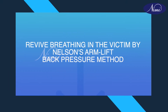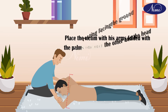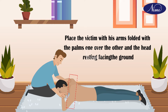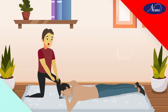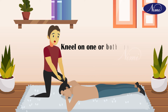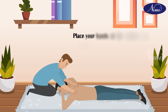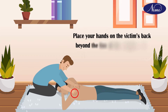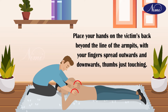To revive breathing by Nelson's arm lift back pressure method: place the victim with his arms folded, palms one over the other, and the head resting facing the ground with his cheek over the palms. Kneel on one or both knees near the victim's head. Place your hands on the victim's back beyond the line of the armpits, with fingers spread outwards and downwards, thumbs just touching each other.